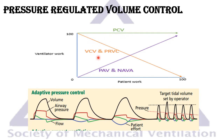In volume controlled mode and in PRVC, because of the set tidal volume, when the patient is passive the ventilator does all the work. The more the patient works and increases P-MOS, the P-Vent — the ventilator's contribution — starts to decrease until the patient is pulling all the tidal volume by himself, and the airway pressure is reduced. The work is shifted from the ventilator to the patient.